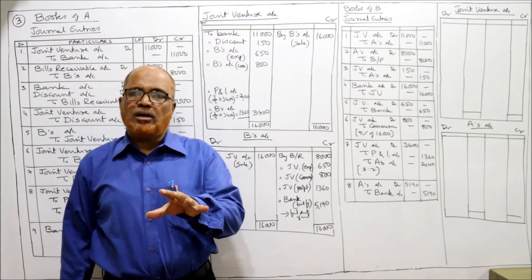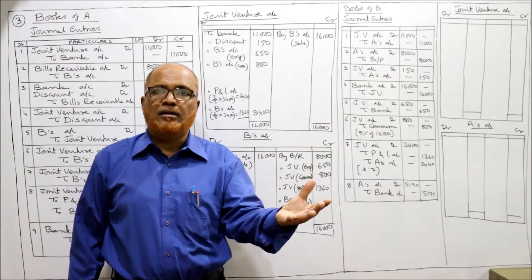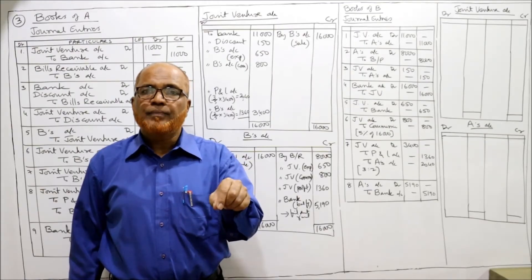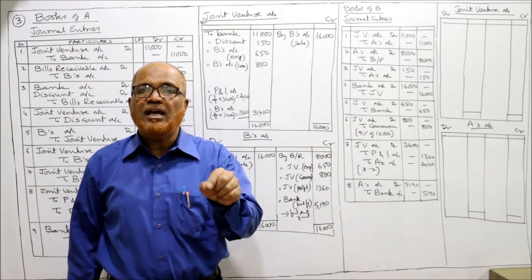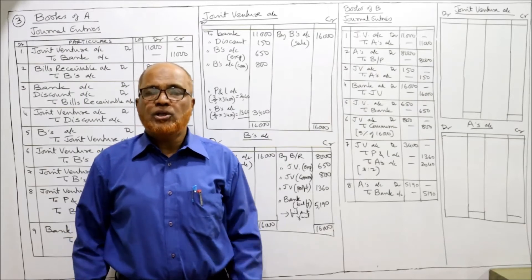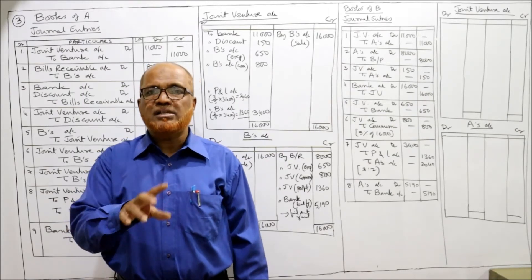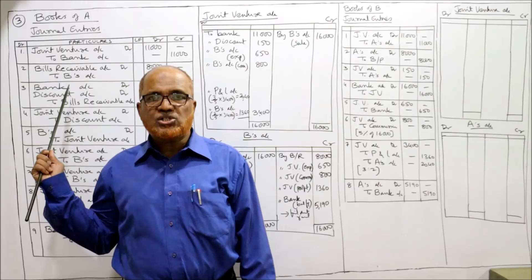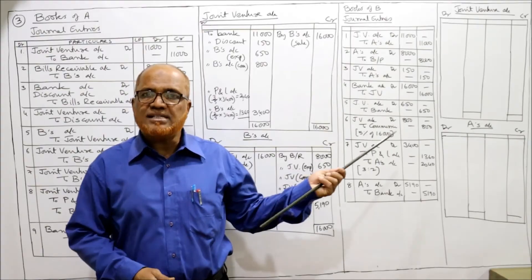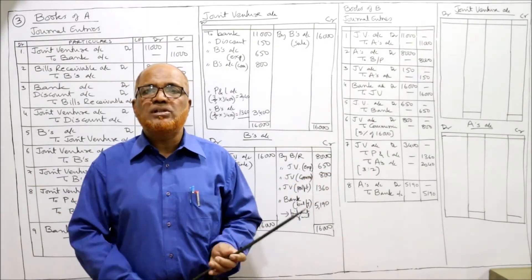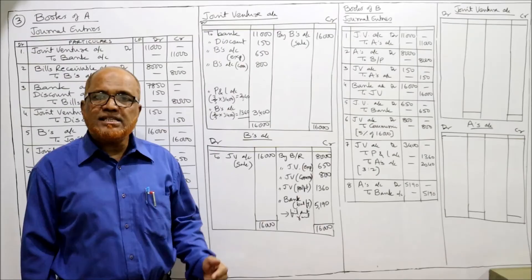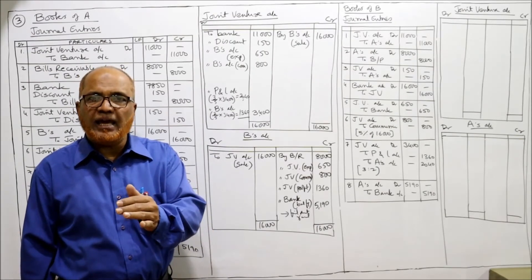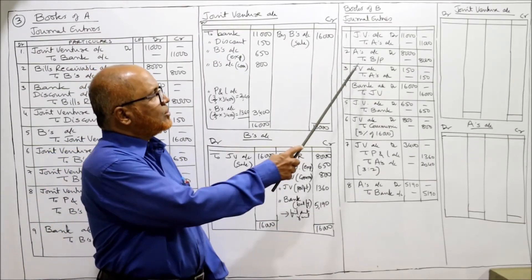A bill is drawn by A on B. When B accepts the bill, he will pass the entry: A's Account Dr. to Bills Payable. A has drawn so bills receivable; B has accepted so bills payable. Entry: A's Account Dr. to Bills Payable - being the bill drawn by A, accepted - 8,000.